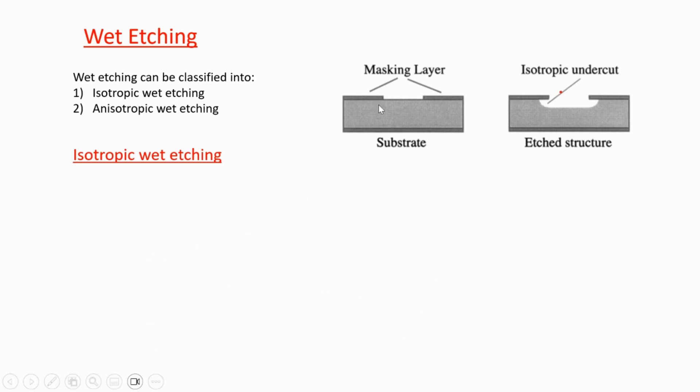If I have a masking layer and a substrate, the etching doesn't depend on the orientation of your crystal or substrate. It will just etch everywhere, which is why you will have an undercut because of isotropic etching. You should always be expecting this, so you should make a mask which is smaller than what you actually want because you will always have this undercut.